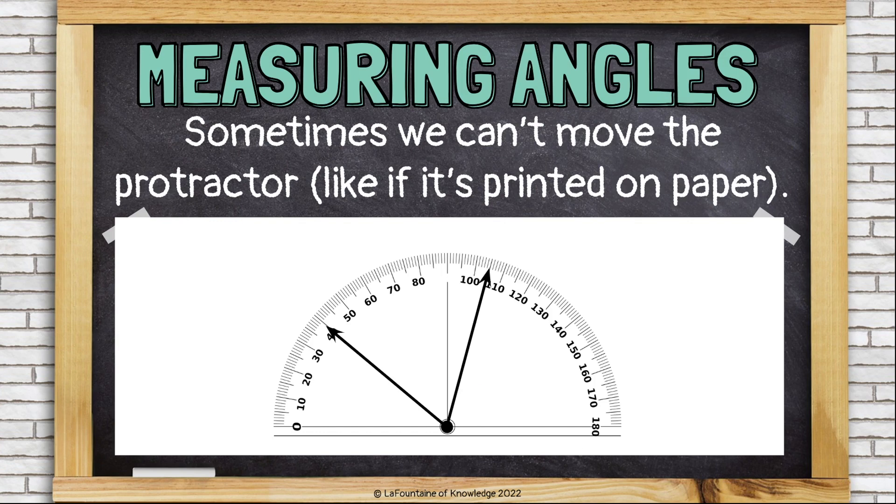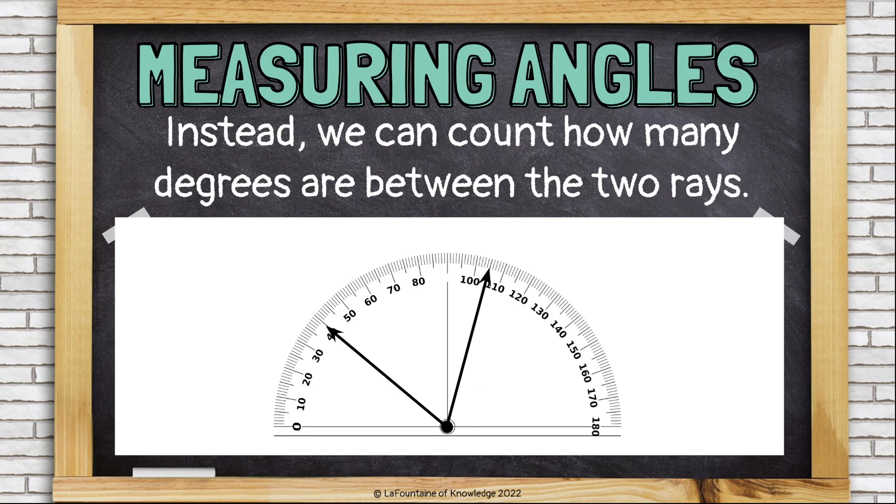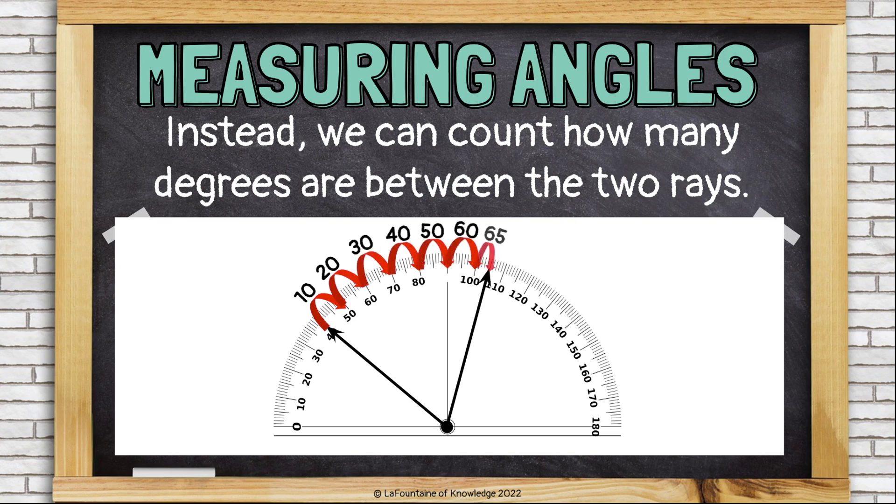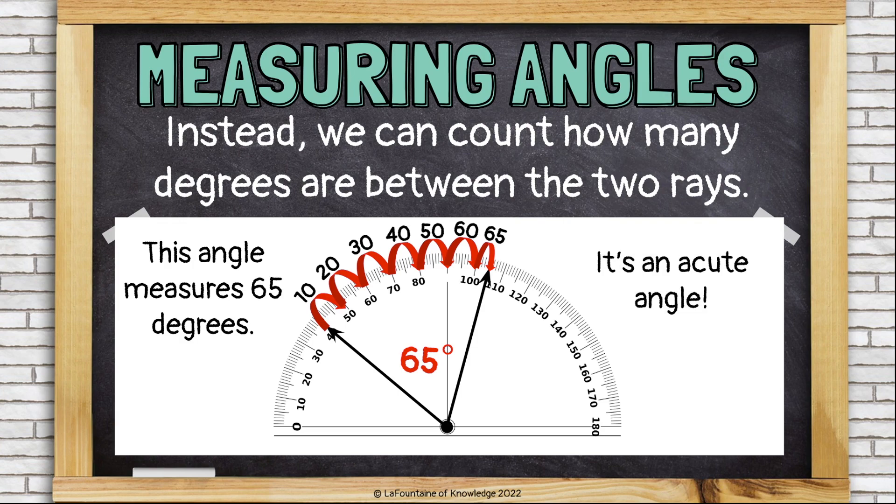Sometimes we can't move the protractor, like if it's printed on paper. Instead, we can count how many degrees are between the two rays. Like this: 10, 20, 30, 40, 50, 60, 65. This angle measures 65 degrees. It's an acute angle.